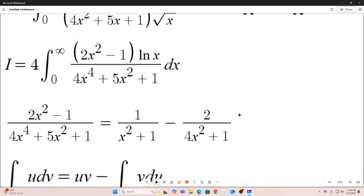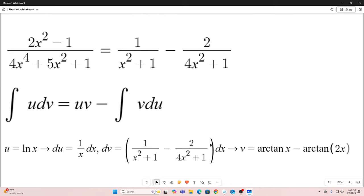We're going to let our dv equal 2x squared minus 1 over 4x to the 4th plus 5x squared plus 1 dx. And don't forget that's the same as this dx. So our dv is this. And you'll notice that each one of these parts, you can easily take the antiderivative of either one of those. That's why I let dv equal that.